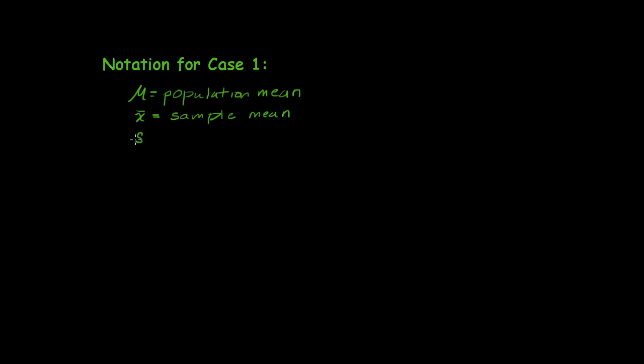Then we have s, which is the sample standard deviation. Now we said sigma is unknown. That's the population standard deviation. But assuming we have a sample, we can compute x bar, we can compute s, so we would have it. N, of course, is our sample size.